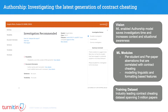Turnitin's core mission is to detect when a student might not have submitted original writing. That could take the form of copying and pasting a Wikipedia article and calling it their work, or increasingly, paying someone to write your essay for you — so it's original writing, but it wasn't written by the student who claims it. Authorship Investigate is a product where we try to determine who the actual author of a piece of writing is.